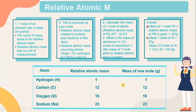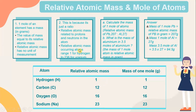Next, let's look into relative atomic mass and mole of atoms. One mole of an element has a mass in grams equal to its relative atomic mass. Relative atomic mass has no unit of measurement, because it is just a ratio. Relative atomic mass is related to the protons and neutrons in the atom, and ranges from 1 for hydrogen to 238 for uranium.